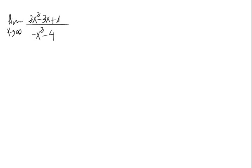We have the limit of a quotient of polynomials. By the limit's properties, as we have polynomials and x tends to infinity, both the numerator and the denominator go to infinity. So from here we can see that we have an indetermination: the numerator equals infinity and the denominator also equals infinity, giving us infinity divided by infinity.